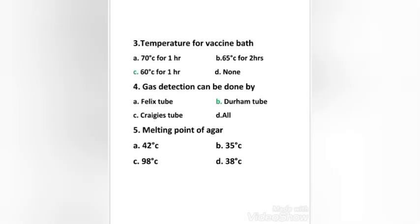Next question: temperature for vaccine bath — 70 degrees Celsius for 1 hour, 65 degrees Celsius for 2 hours, 60 degrees Celsius for 1 hour, or none? The right answer is option C, 60 degrees Celsius for 1 hour. A vaccine bath is an apparatus used in vaccine production. As vaccines are very heat labile but inevitably need to be heated to some extent, these devices are used. They are basically water baths with a temperature set very low, and a long time is taken to sterilize vaccines by this method.